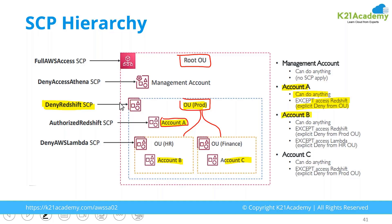For account B — it is a member of both Prod and HR. Prod is denying Redshift, and HR is denying Lambda. Apart from those two restrictions, account B will be able to do everything else. For account C in the Finance OU — Finance does not have any SCP associated, so only the Prod SCP and root SCP apply. Prod has a restriction denying Redshift, and root SCP has full access. So except Redshift, everything can be done by account C, provided the proper permissions are given.